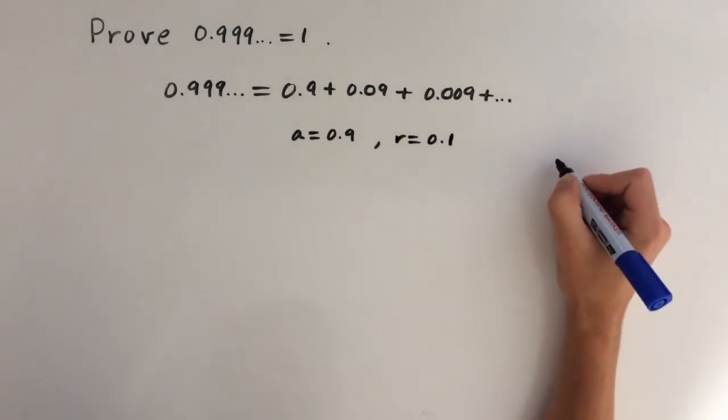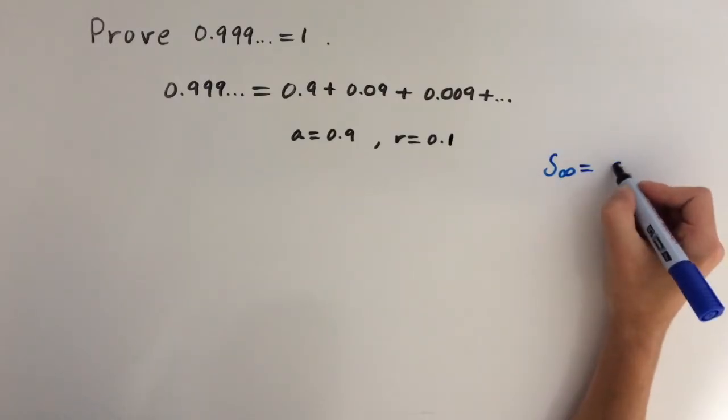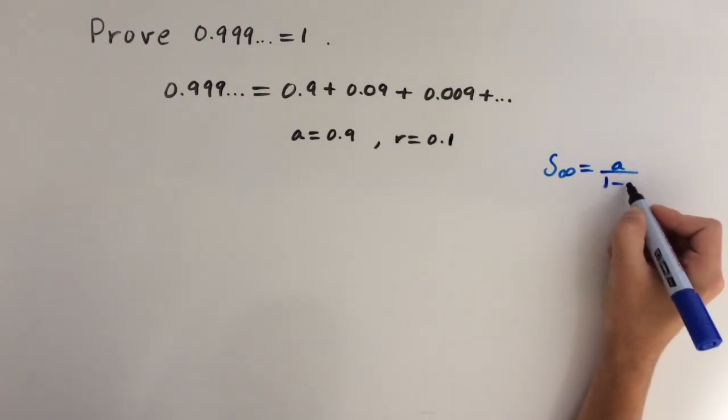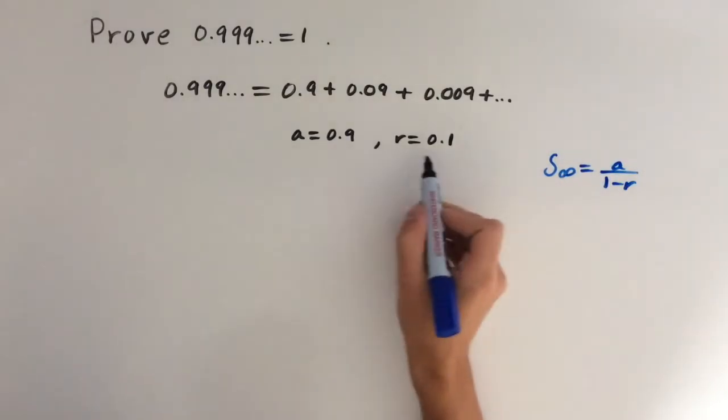Now if you think back to the formula for the sum of an infinite converging geometric series, this is a over 1 minus r. Now we need to sub these values into the formula.